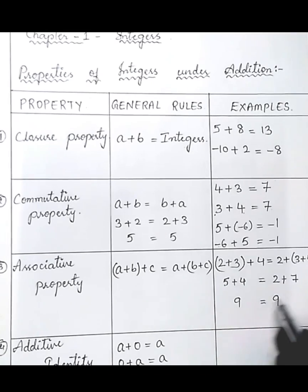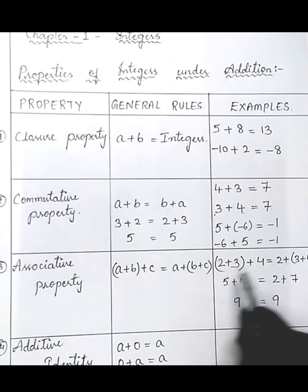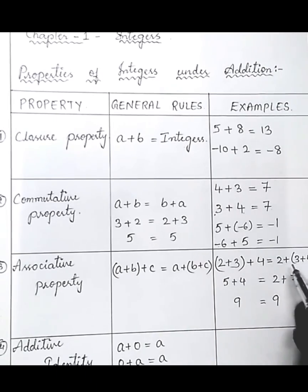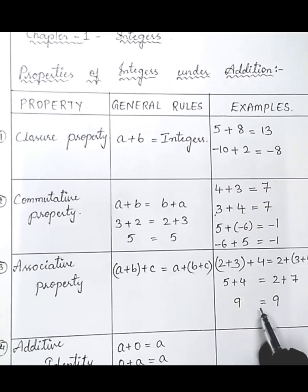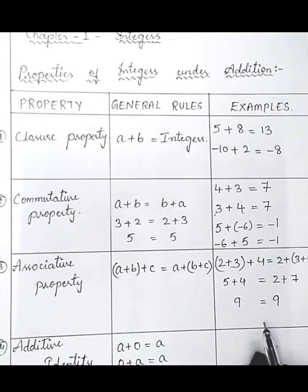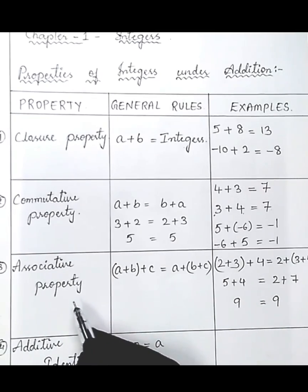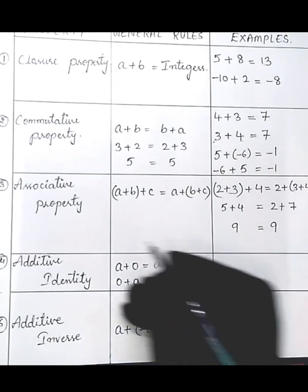So with this example we can understand that if you add a plus b first and then add c, or if you add b plus c first and then add a, both give the same answer. This is explained by the associative property.